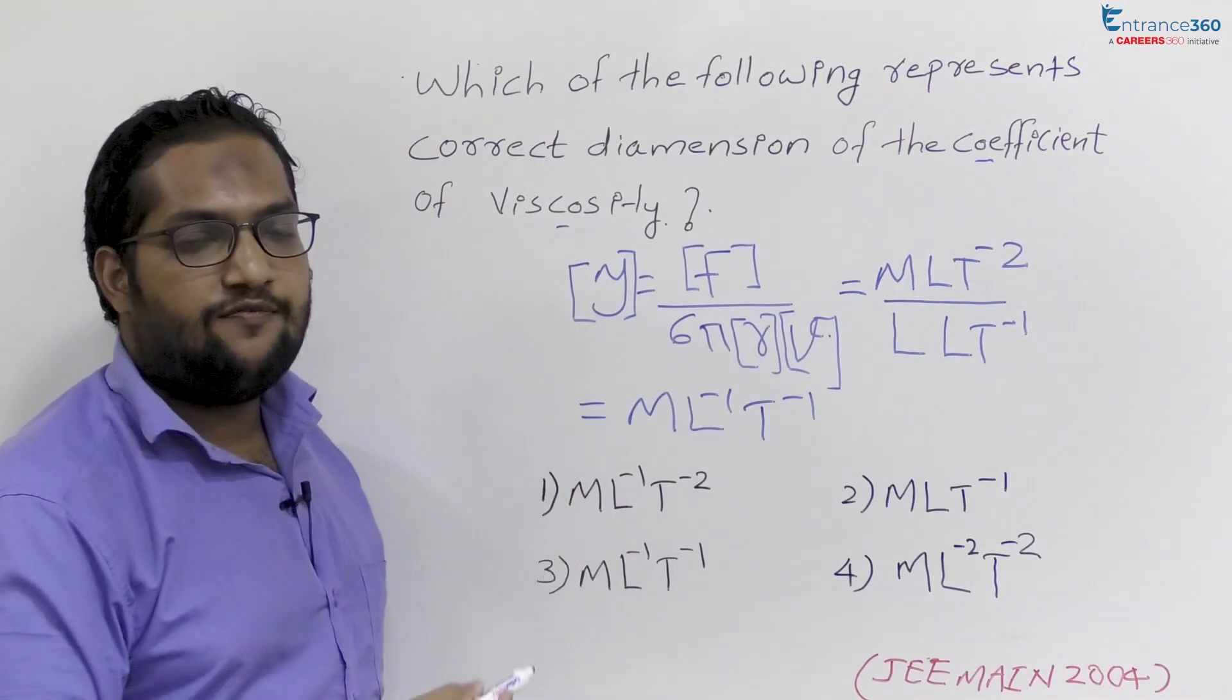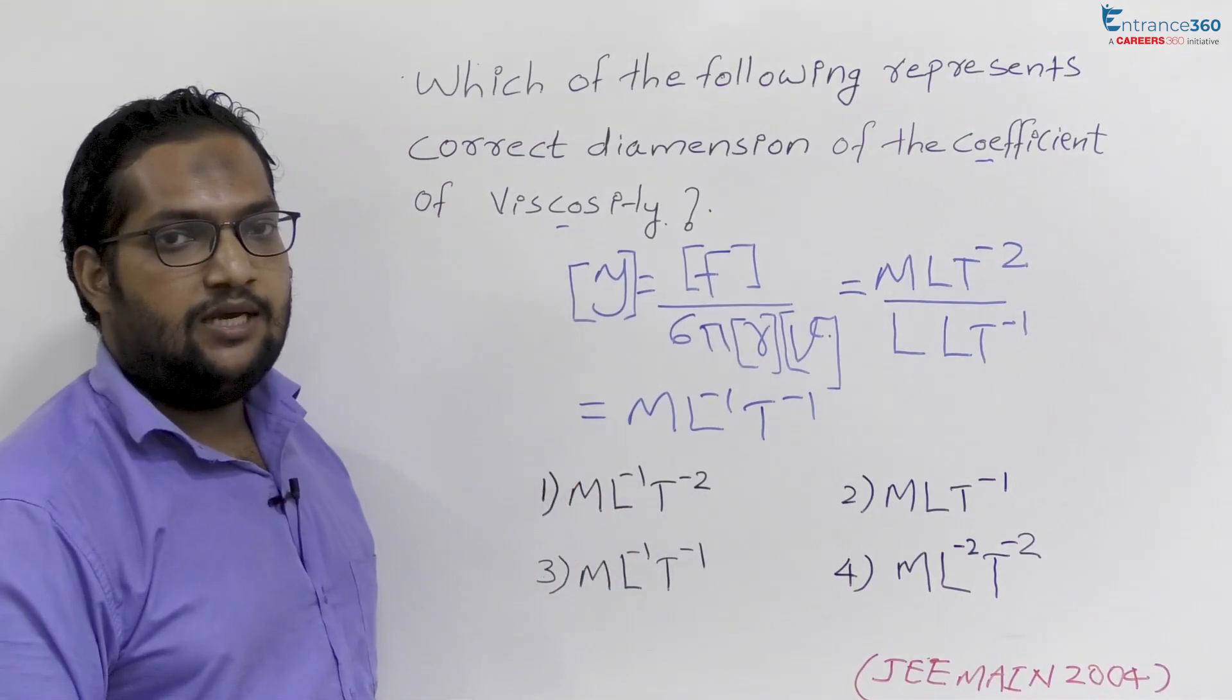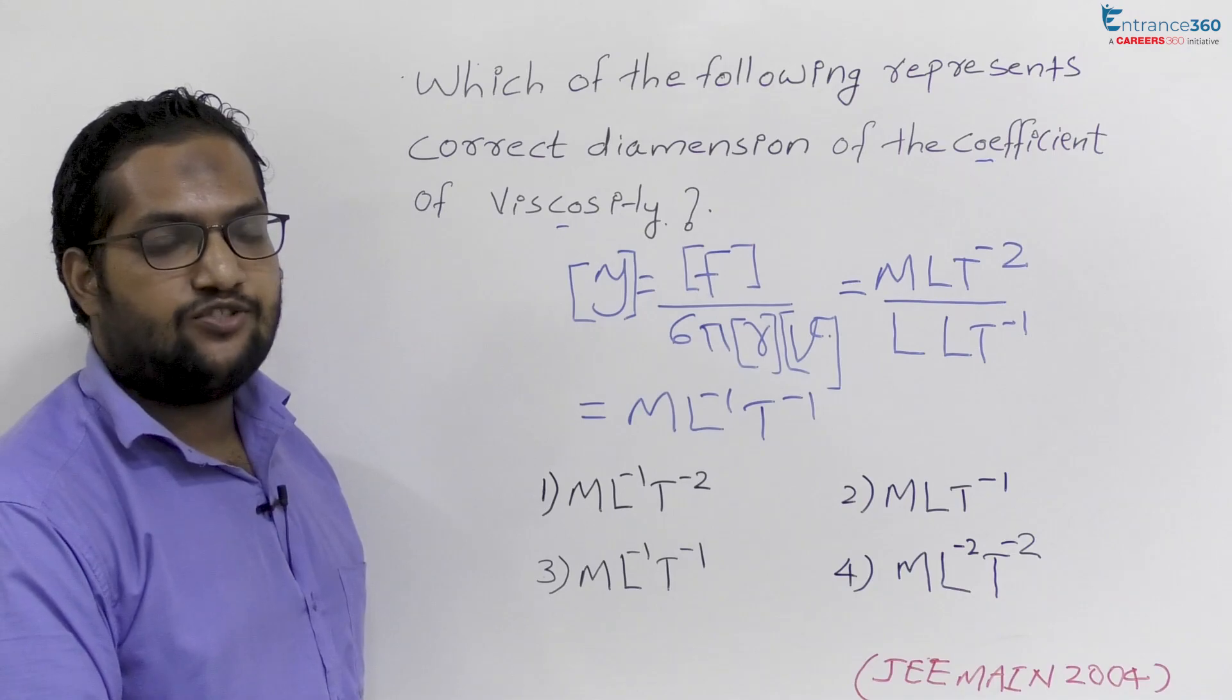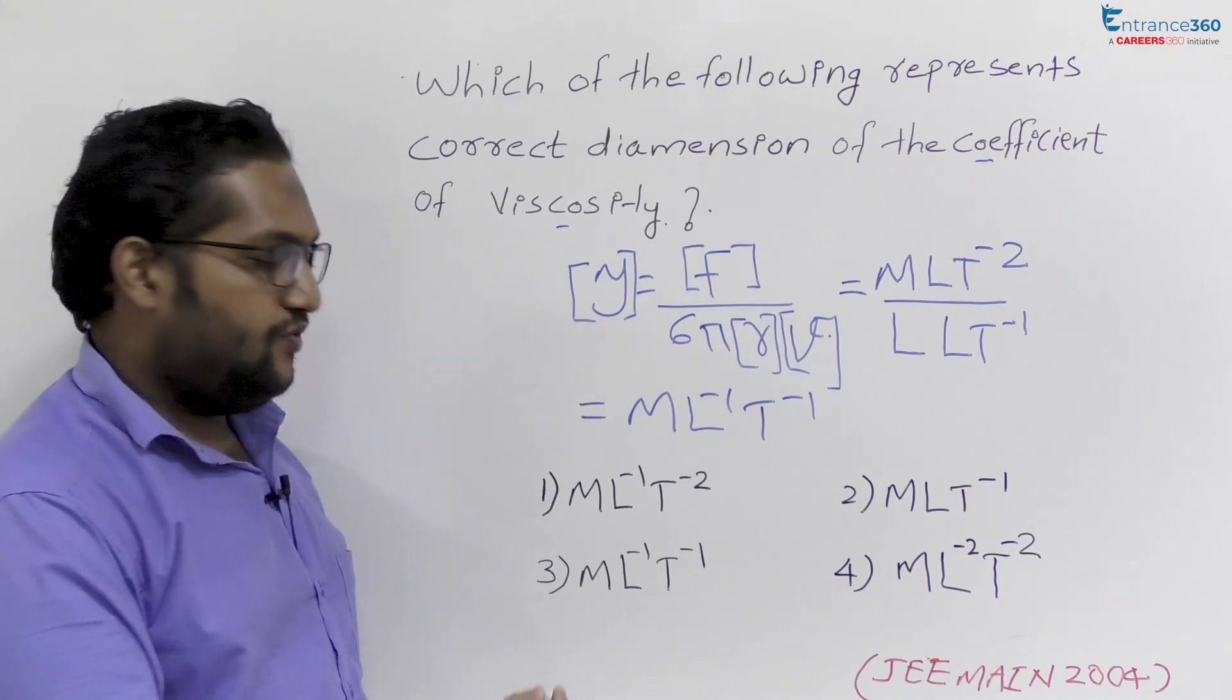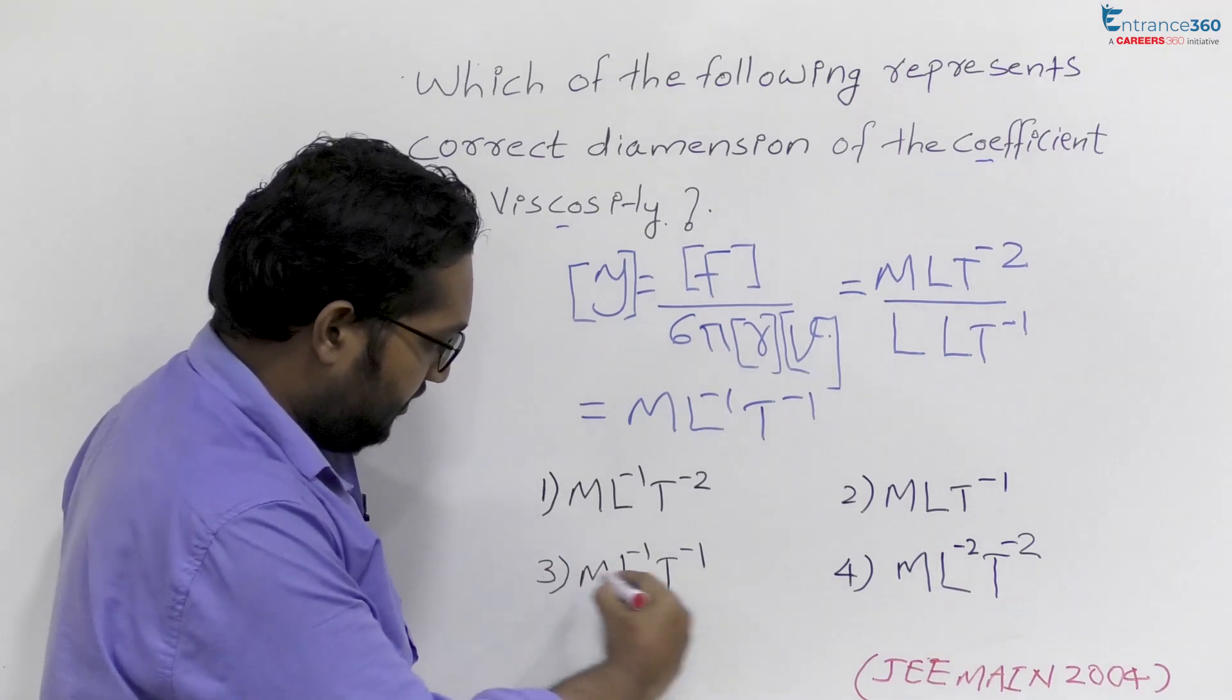So dimension of coefficient of viscosity is ML⁻¹T⁻¹, which is our option 3.